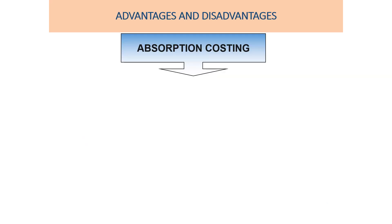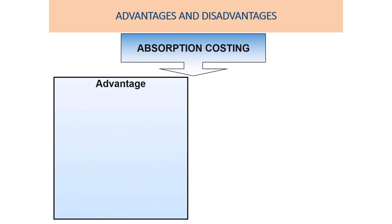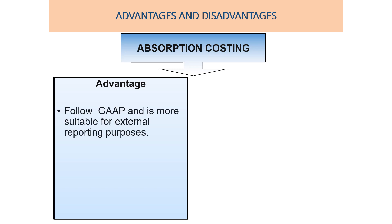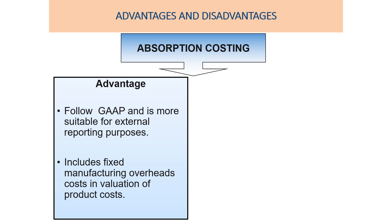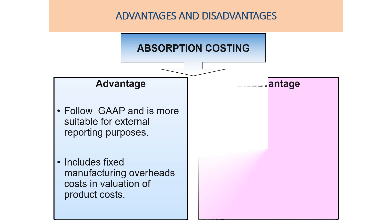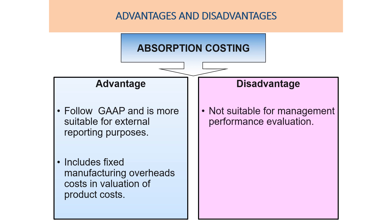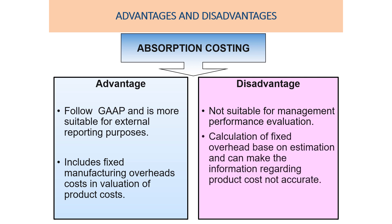Looking at advantages and disadvantages of absorption costing: The advantages are that it follows GAAP and is more suitable for external reporting purposes, and it includes fixed manufacturing overhead costs in the valuation of product costs. The disadvantages are that it is not suitable for management performance evaluation, and calculation of fixed overhead is based on estimation, which can make information regarding product costs inaccurate.